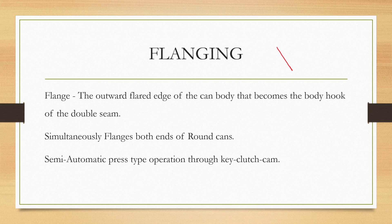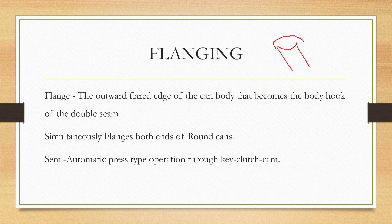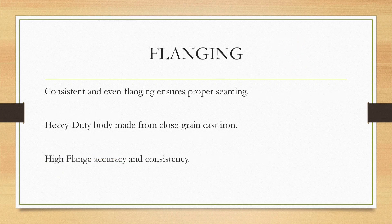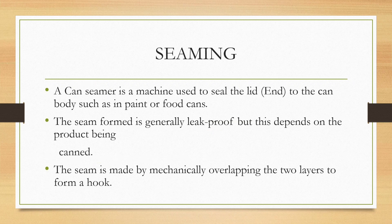This outer flat edge becomes the body hoop of the double seam. When you put the can into a flanging machine, both the upper and lower parts undergo flanging simultaneously. A semi-automatic press-type operation is used for this flanging process. Only when flanging is consistent and even will you have a proper seaming process. High accuracy and consistency are required for perfect flanging, and cast iron is typically used.